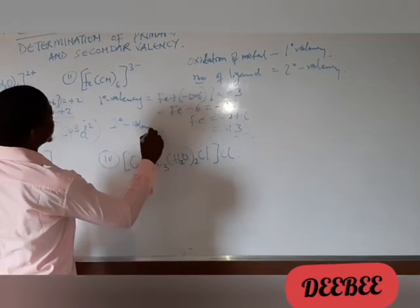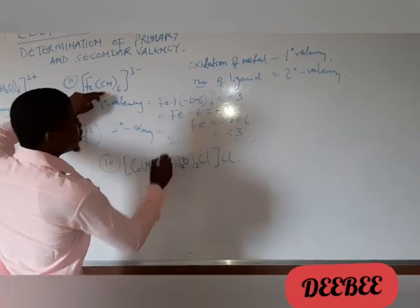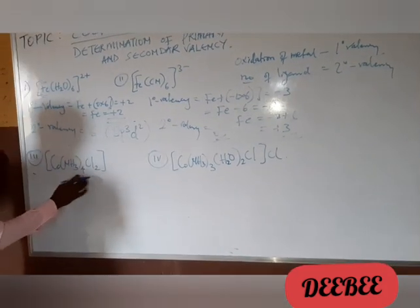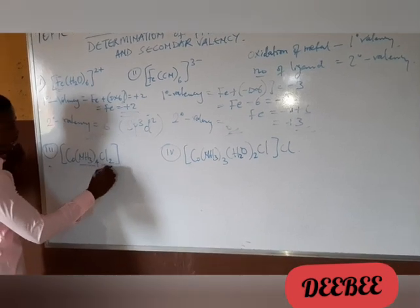The secondary valence of this complex is 6, because we have 6 ligands. We have 6 ligands. And here, we have 2 ligands here. We have amine and we have the chlorine.